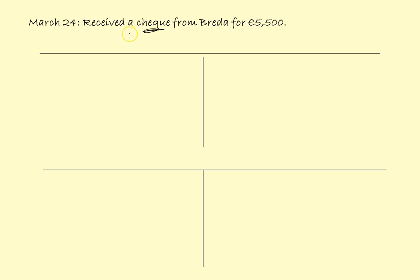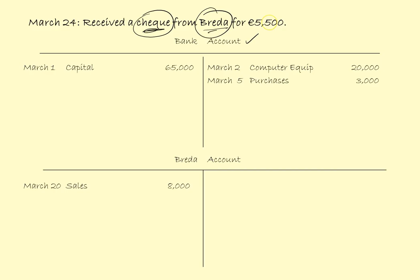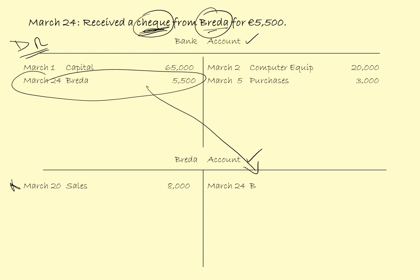March the 24th: received a cheque from Brida for 5,500. Cheque implies bank, so the two accounts are bank and Brida. We're receiving a cheque from Brida, so money is going into the bank — it goes on the debit side. March the 24th, Brida, 5,500. And the double entry will be on the credit side of Brida's account: March the 24th, Bank, 5,500.